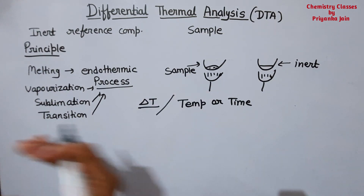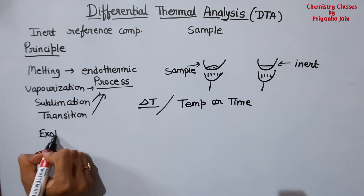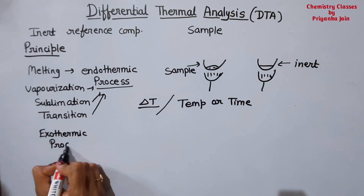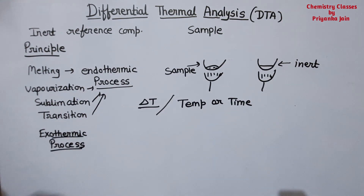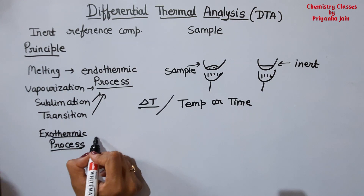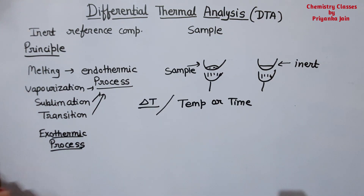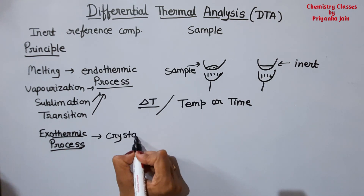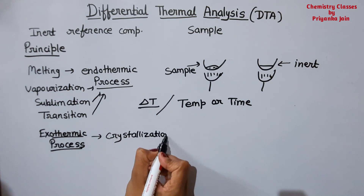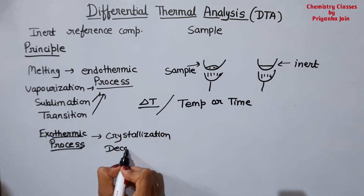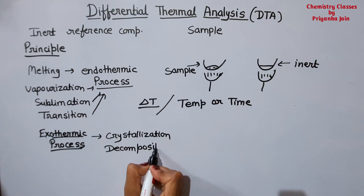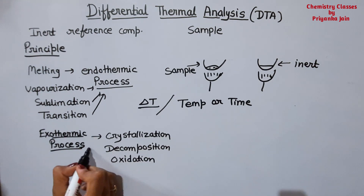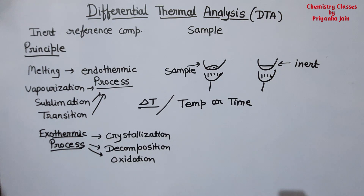Now suppose the sample undergoes an exothermic process. In an exothermic process, heat is evolved. Processes like crystallization — which is exothermic — or decomposition, or oxidation, are all exothermic processes.